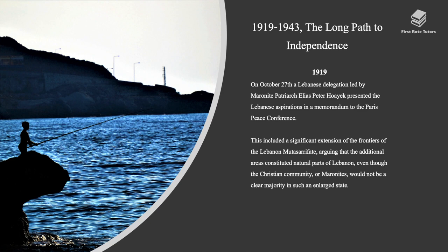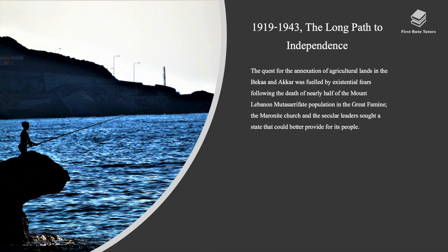In 1919, on October 27th, a Lebanese delegation led by the Maronite Patriarch presented Lebanese aspirations in a memorandum to the Paris Peace Conference. This included a significant extension of the frontiers of the Lebanon Mutasarrifate, arguing that the additional areas constituted natural parts of Lebanon, even though the Christian community or Maronites would not be a clear majority in such an enlarged state. The quest for annexation of agricultural lands in the Bekaa and Akkar was fueled by existential fears following the death of nearly half of the Mount Lebanon Mutasarrifate population in the Great Famine.